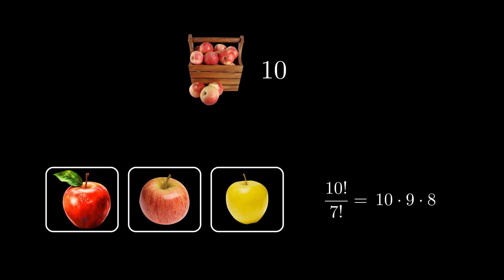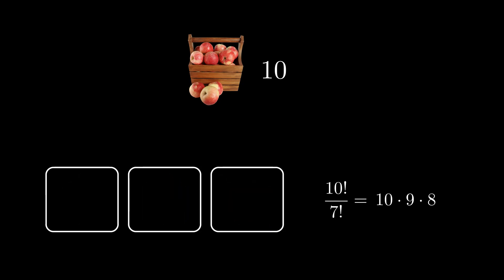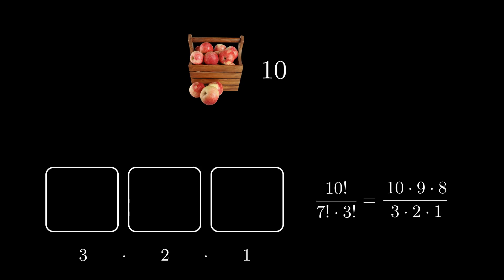However, this considers order. For us, order doesn't matter, only the three different apples. Let's think: how many ways can we arrange three slots? Well, in 3 factorial ways. This needs to be divided out as we've over-counted each result by this many arrangements.